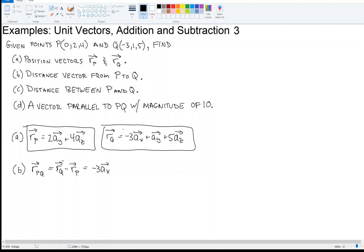Okay, now the Y direction, Q's is 1, and P's is minus 2, so 1, or P's is 2, so 1 minus 2 is minus 1, minus AY, like that. Alright, and then finally for the Z direction, we have 5 minus 4 is 1, so plus AZ.